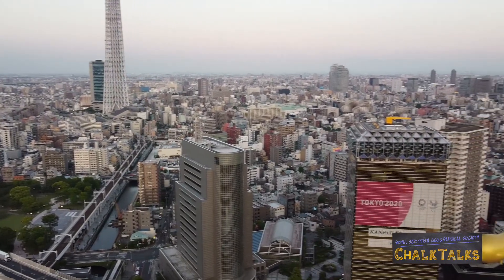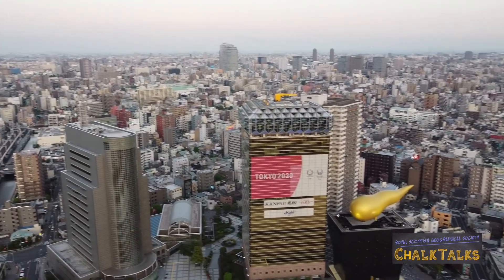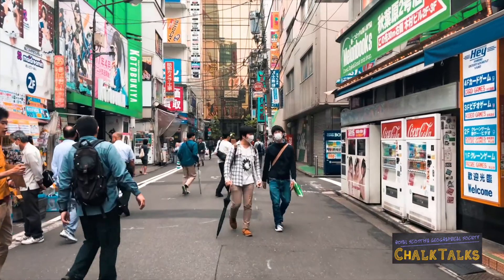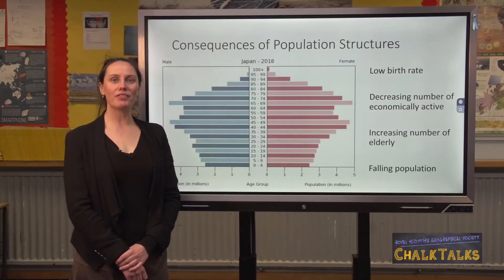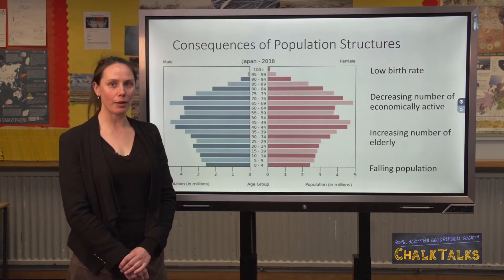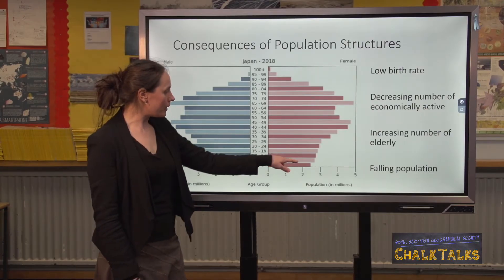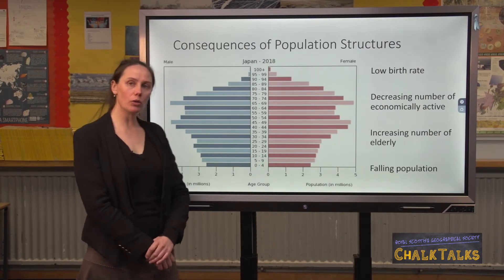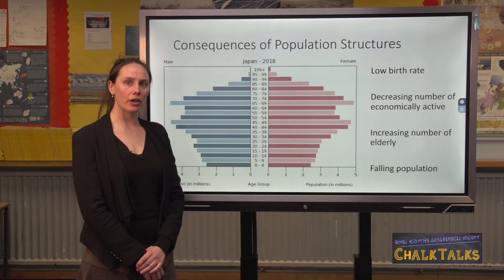Now let's contrast this with the population structure of a developed country — in this instance Japan. Japan has a very different population structure to Malawi. The narrow base means there is a relatively low birth rate and a small number of young people.